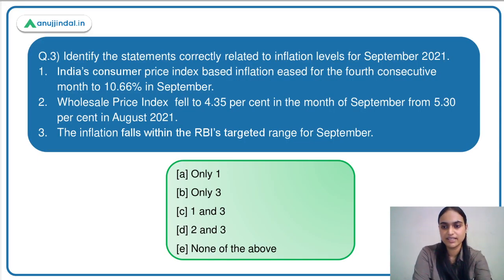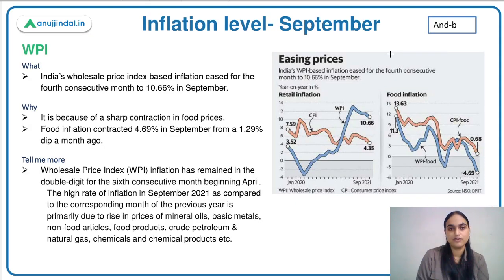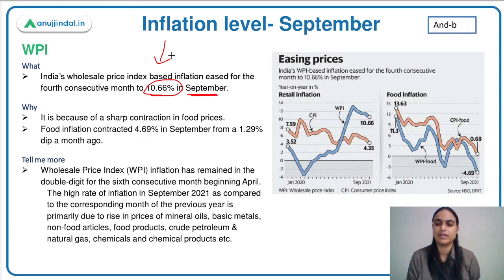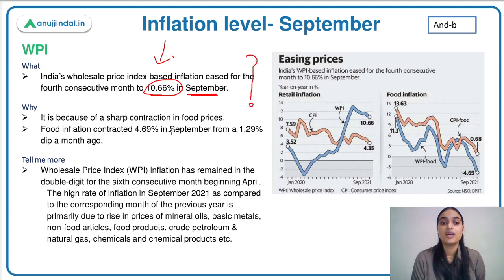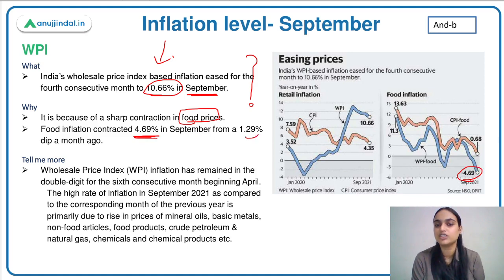Moving on to the last question: identify the statements correctly related to inflation levels for September 2021. Every month we have WPI and CPI levels. Talking about WPI first, it has eased for the fourth consecutive month to 10.66% in September — last month it was around 11.3%. What is the reason behind the fall in WPI? Contraction in food prices: food inflation has reduced by about 4.69%, whereas in the previous month it was just a 1.29% fall. So food inflation has majorly contributed to the fall in WPI.